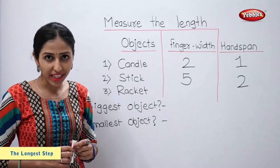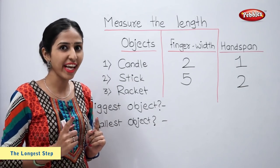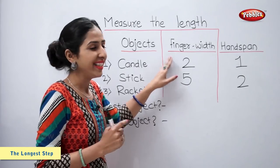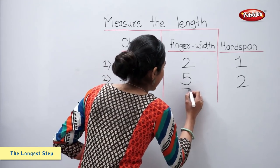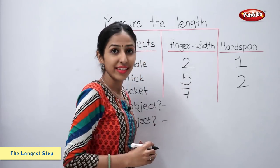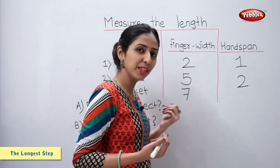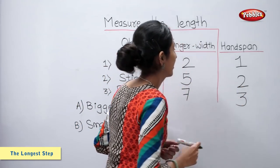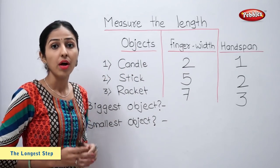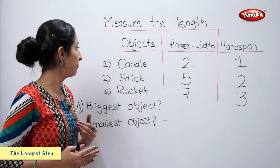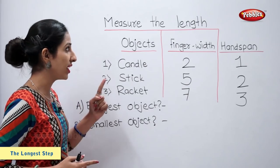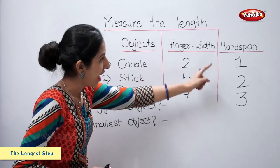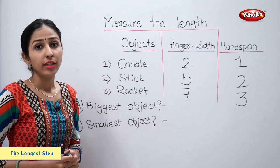Now let us write the length of the racket. Seven finger width, three handspan. So we have measured the length of these objects using finger width and handspans. Now, students.